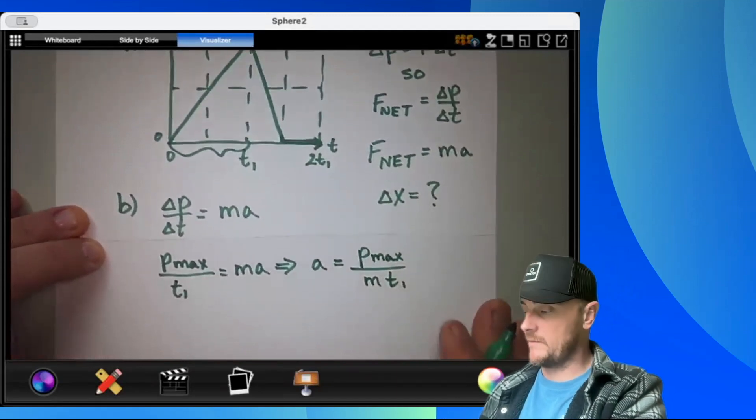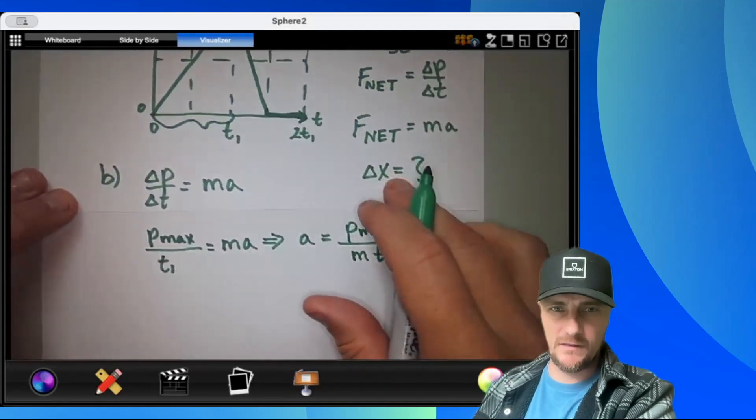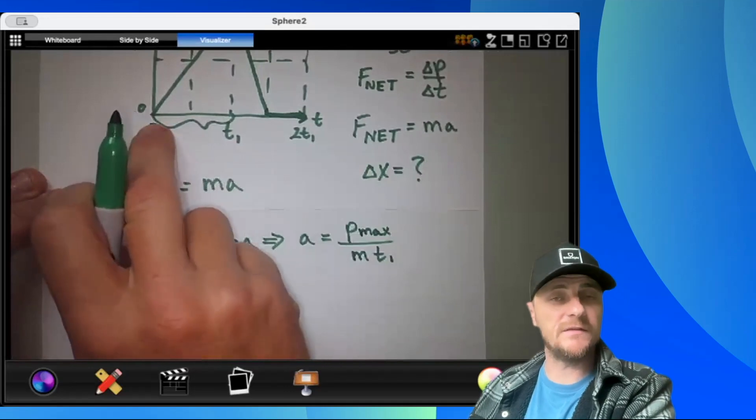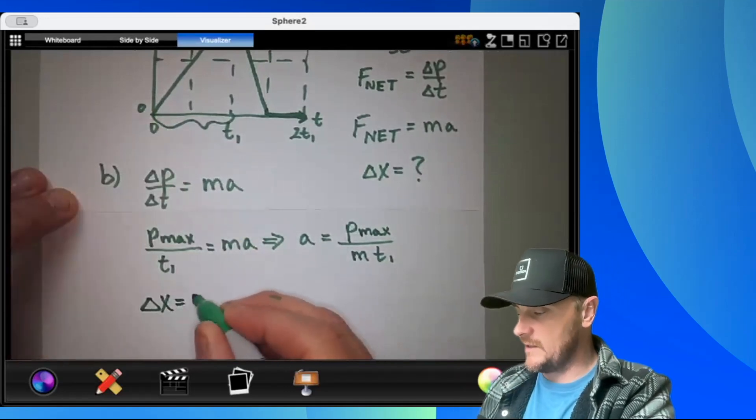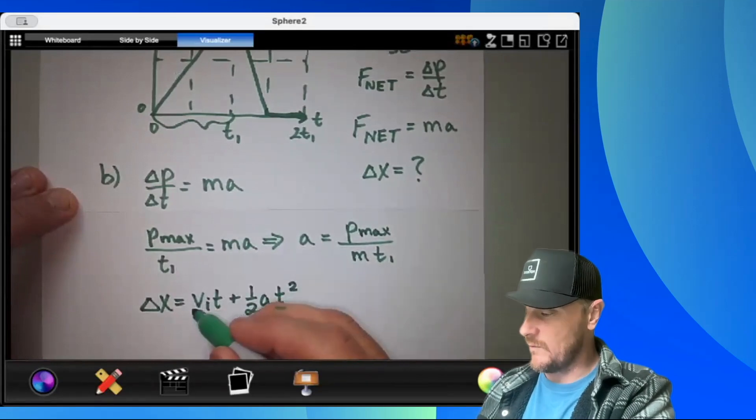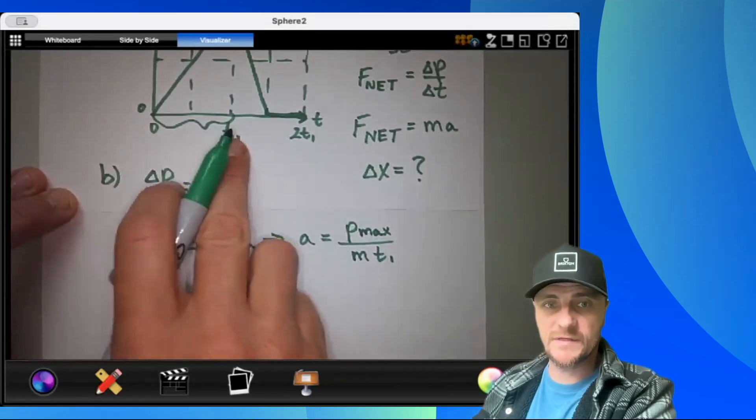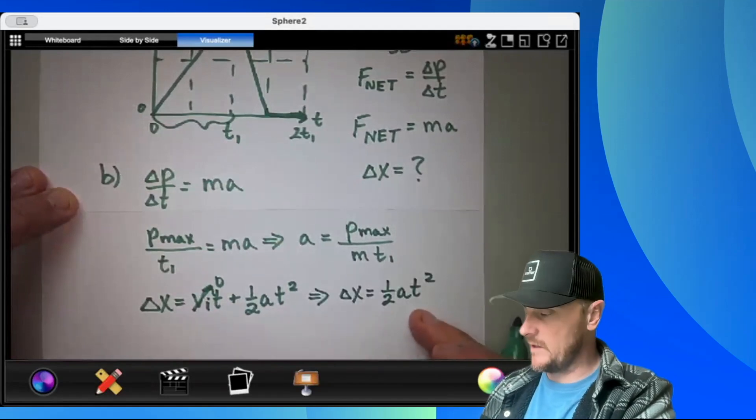Awesome. We're getting somewhere. Now let's go ahead and decide how am I getting delta x on the scene. Well, my initial velocity is zero. So I think it would make sense to use delta x equals the initial v times t plus one half a t squared, where my initial velocity for this first time segment is zero. That would yield delta x equals one half a t squared.